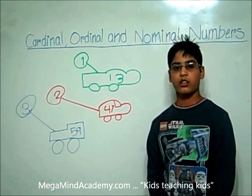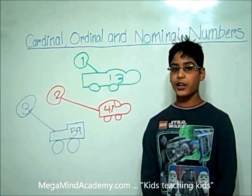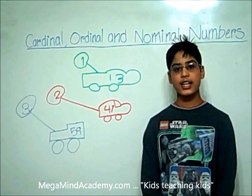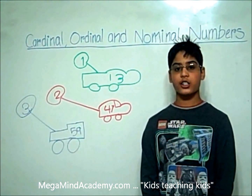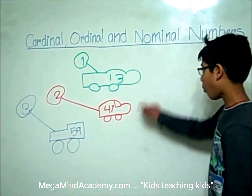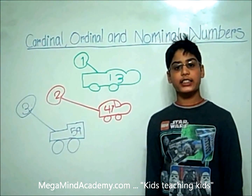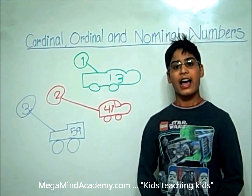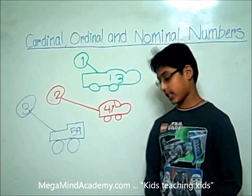So, let's first start with the cardinal question. This question is, how many cars are on the race track? One, two, three. Three is a cardinal number. It answers the question, how many cars are on the race track?